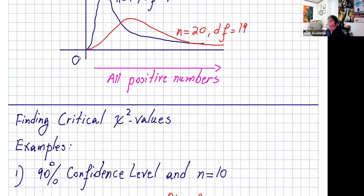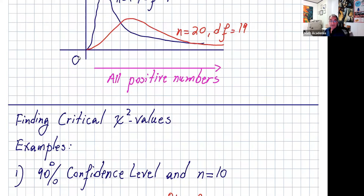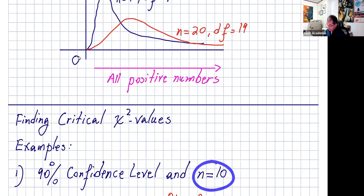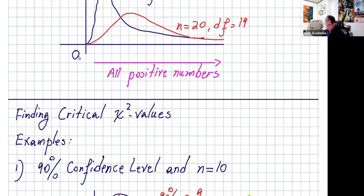Now let's find some critical chi-squared values. We are going to use the table — the calculator requires programming for this, so I want to make sure you know how to use the table. In order to find chi-squared critical values, you need to know the confidence interval and n, so you can calculate the degrees of freedom: n minus one.